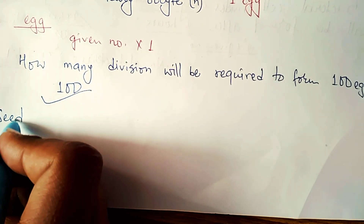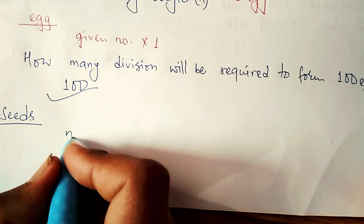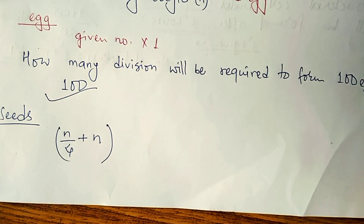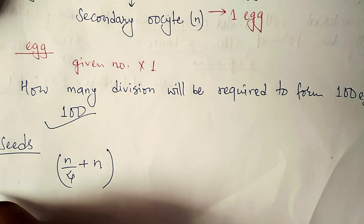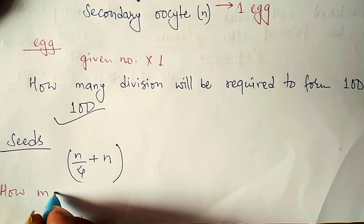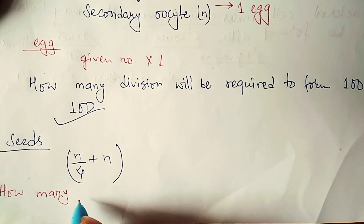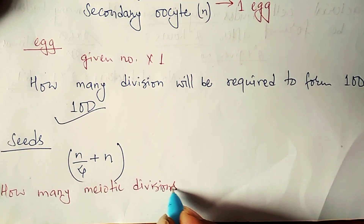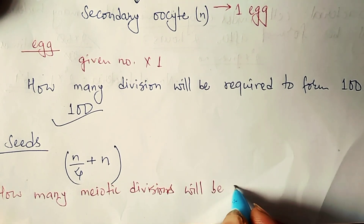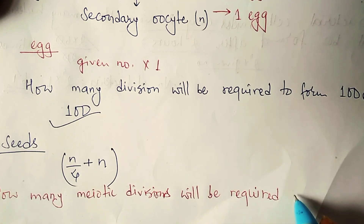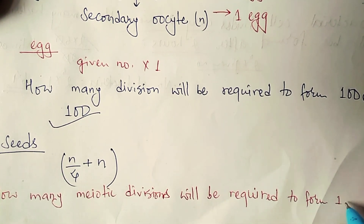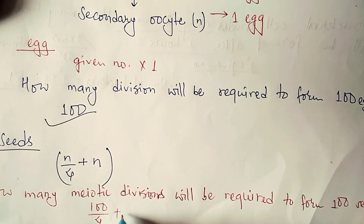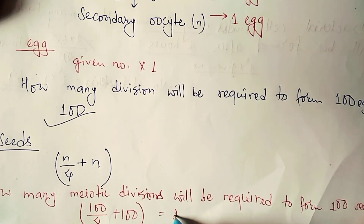The formula for number of seeds formed is: number of meiotic divisions = n divided by 4 (from pollen/male) plus n (from egg/female). Question: How many meiotic divisions are required to form 100 seeds? The answer is 100 divided by 4 plus 100, which gives 25 plus 100 equals 125 divisions.